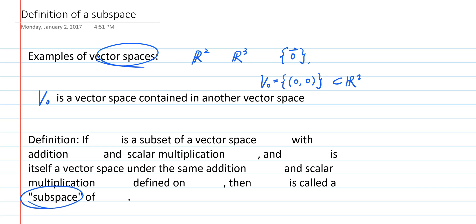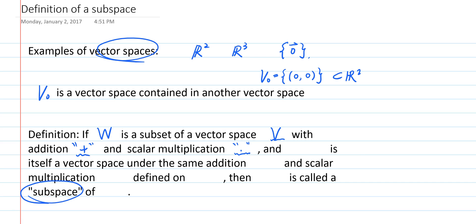The official definition is: if W is a subset of a vector space V, with the addition and scalar multiplication defined on V, and W is itself a vector space under the same addition and scalar multiplication defined on V, then W is called a subspace of V. Let's break down the definition step by step.